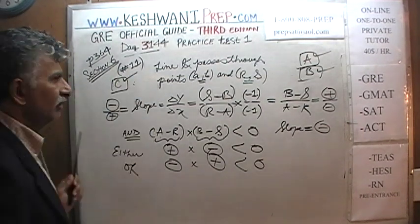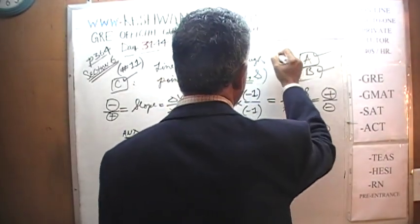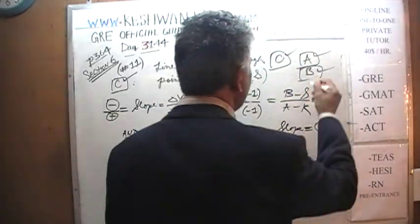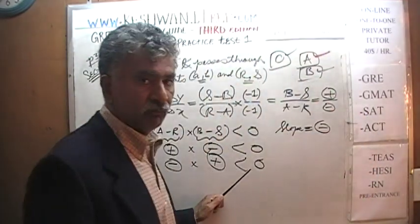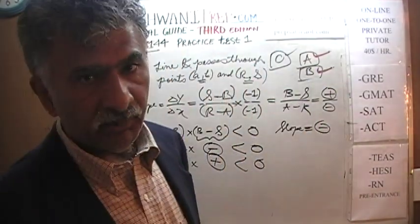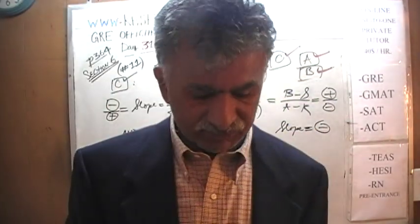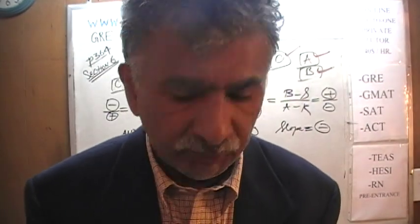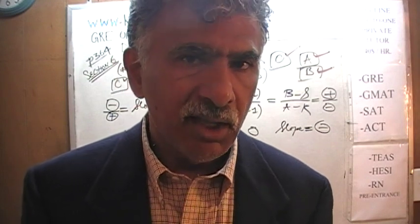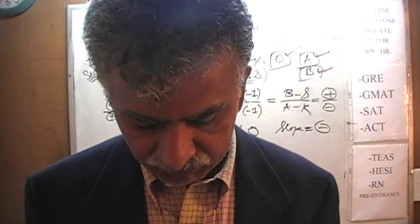Statement C also works. This is one of the rare occasions where all three statements work. Statement A provided sufficient information for us to tell that the line is negatively sloped. Statement B also did the job. And Statement C works just as well. All three statements individually provide sufficient information for us to conclude, without a shadow of doubt, that the line in question must be negatively sloped.